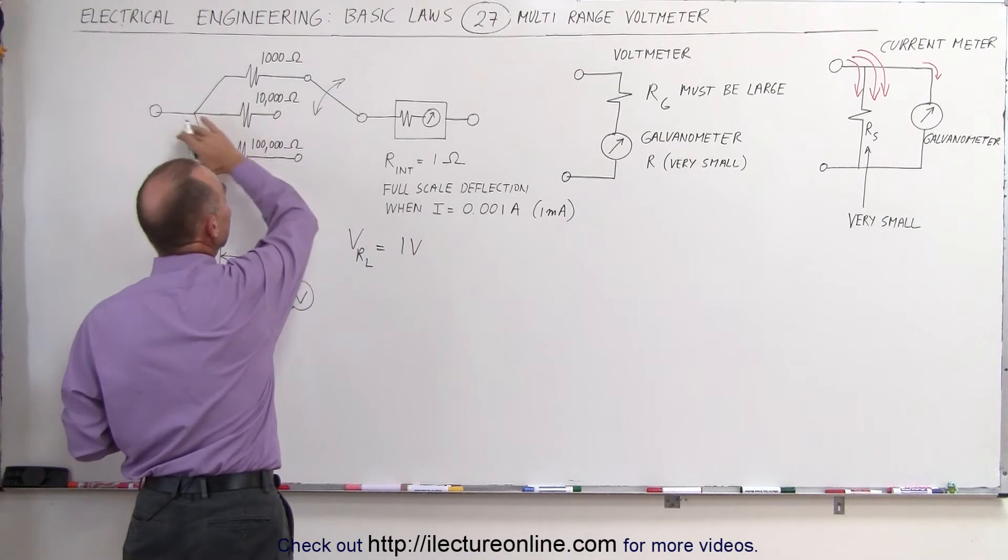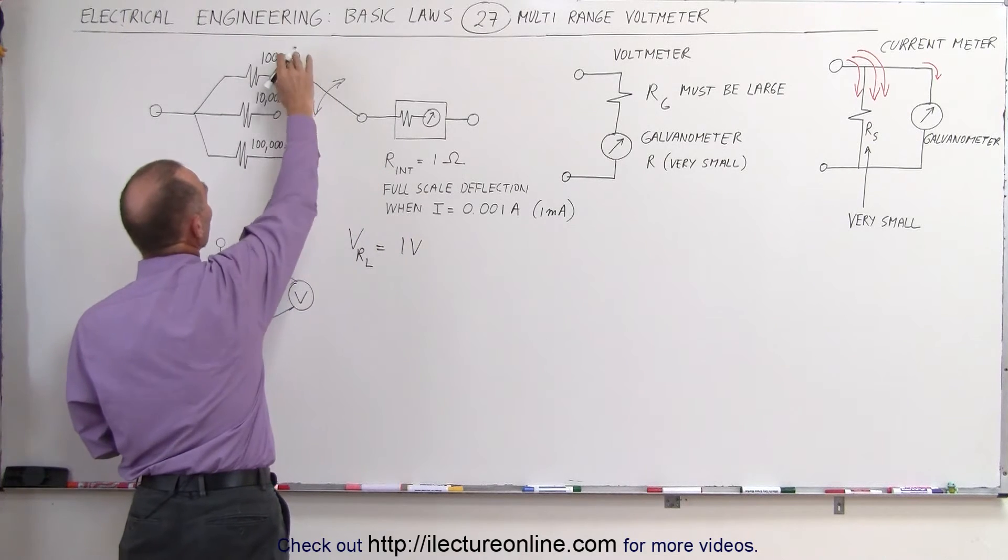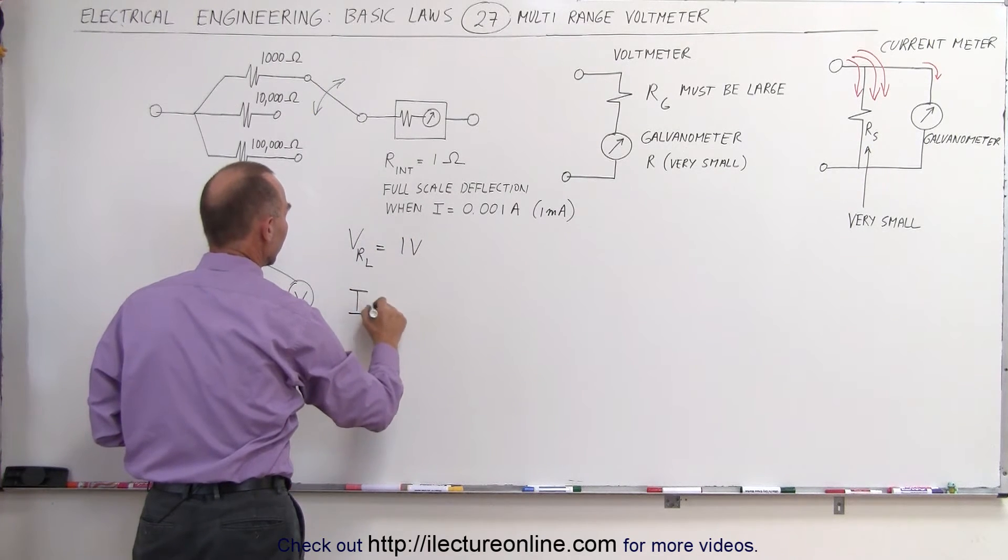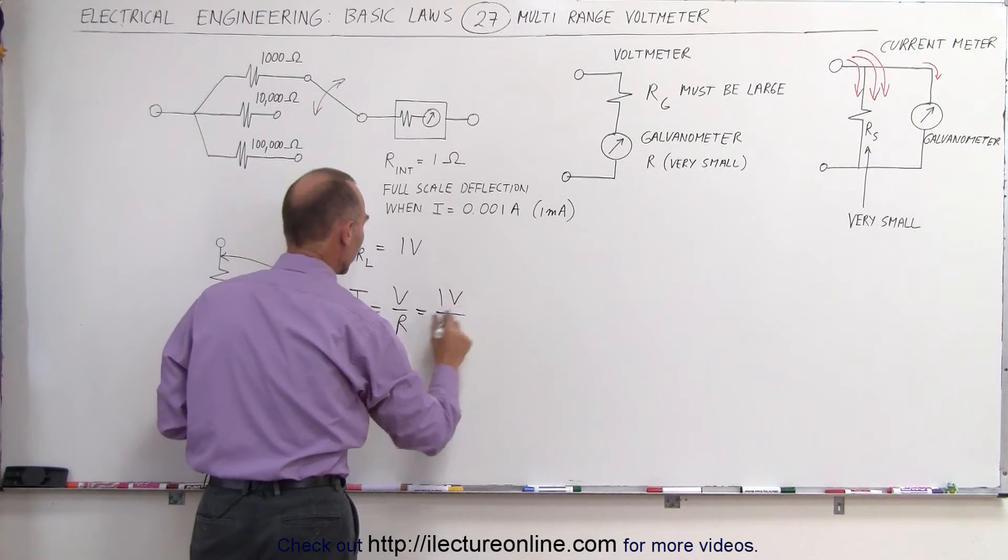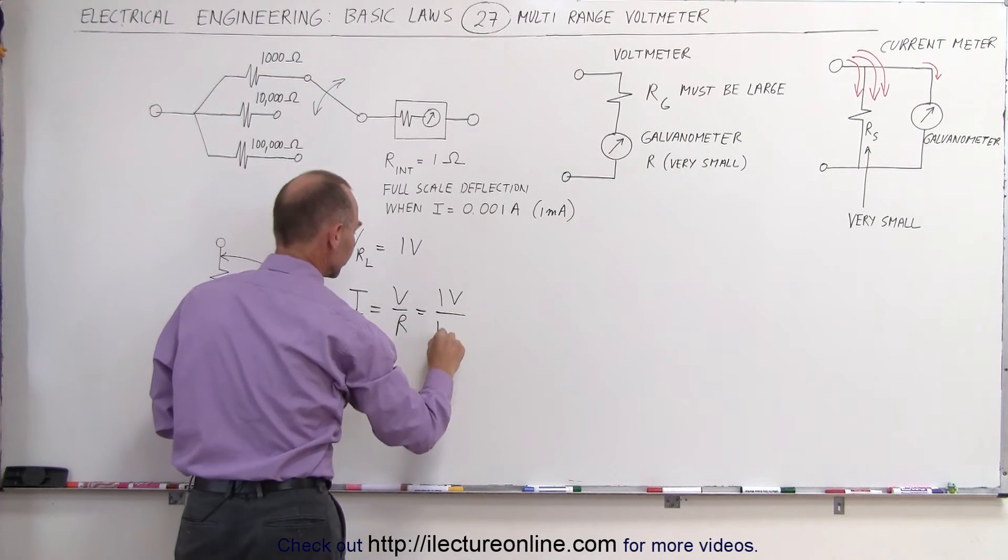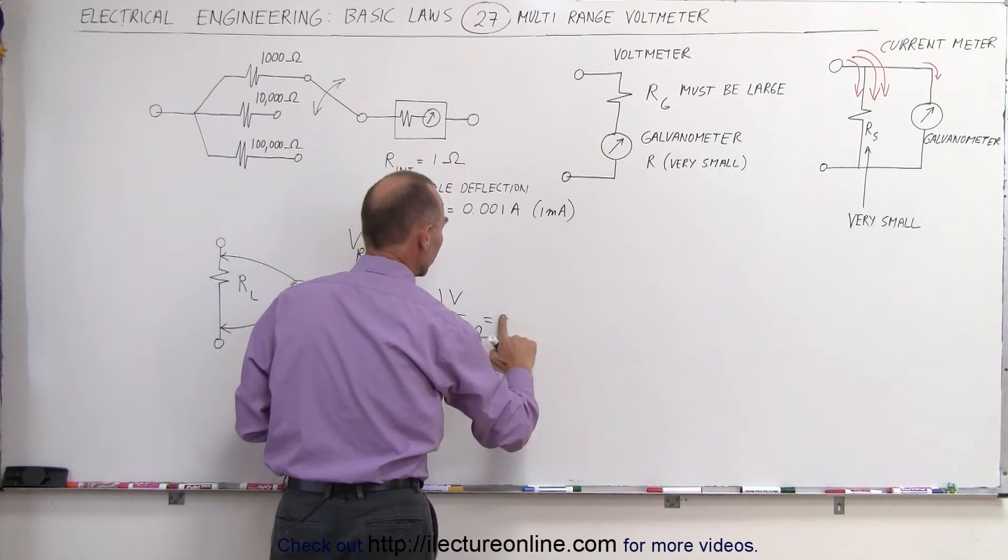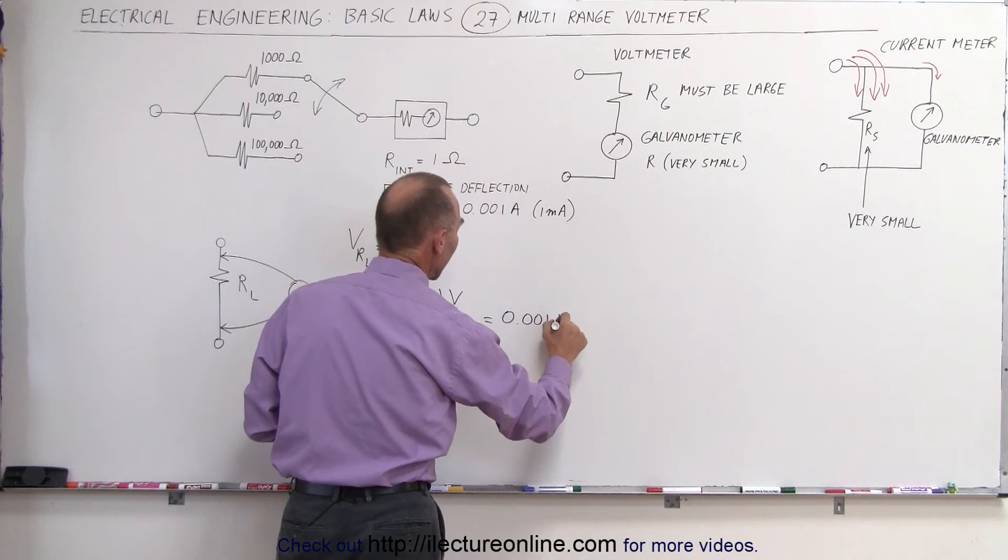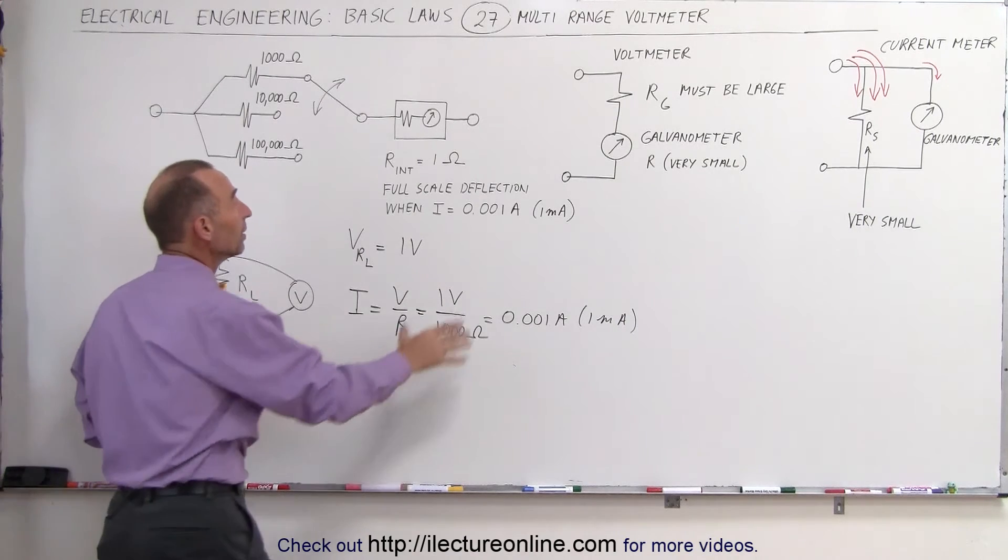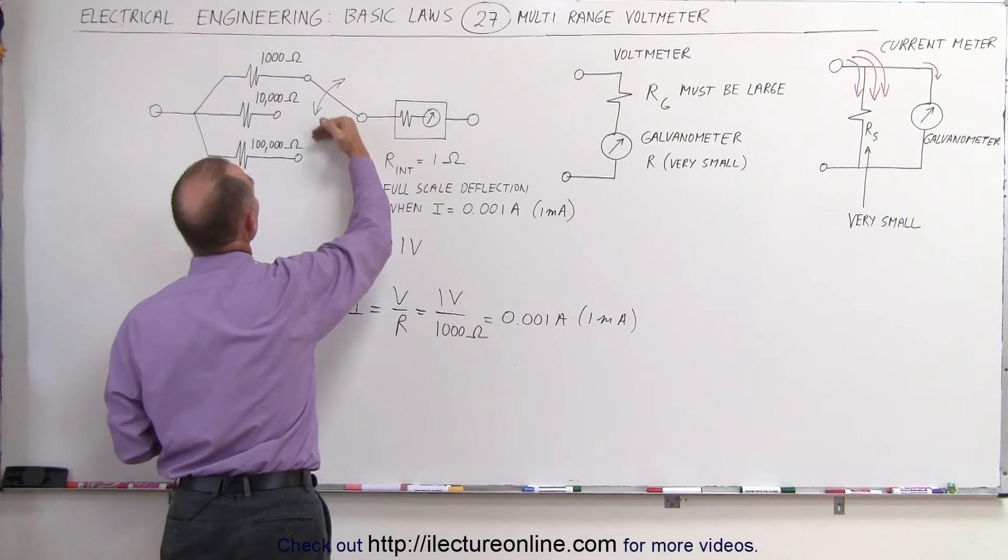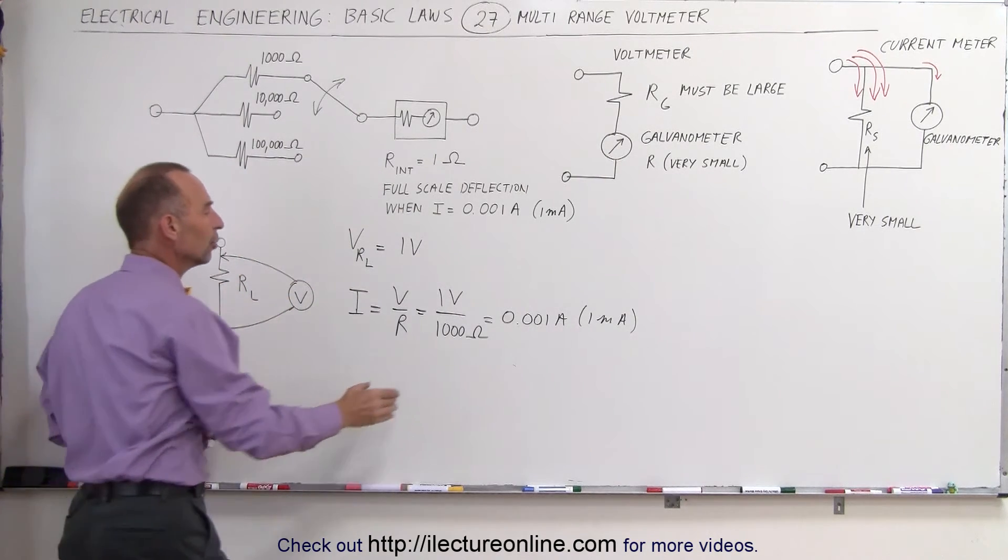Let's now see what the current would be in the voltmeter if we attach this particular voltmeter that has 1,000 ohms across it. So the current I is equal to V divided by R, in this case we know that we're measuring 1 volt, and the resistor that we dialed in was 1,000 ohms. 1 volt divided by 1,000 ohms, that's equal to 0.001 amp, which is 1 milliamp, which means that we can measure as much as 1 volt with the galvanometer if we have the resistor dialed to 1,000 ohms.